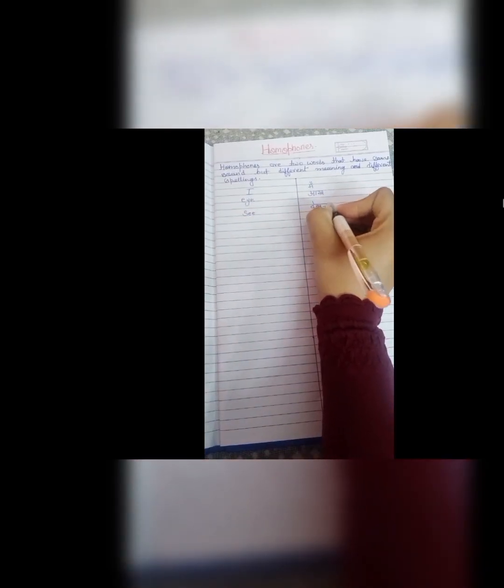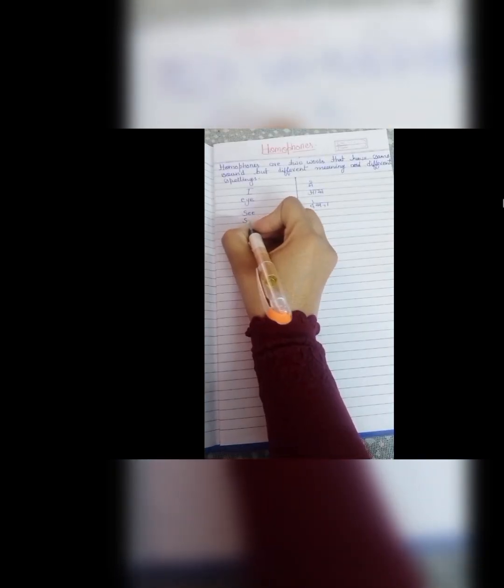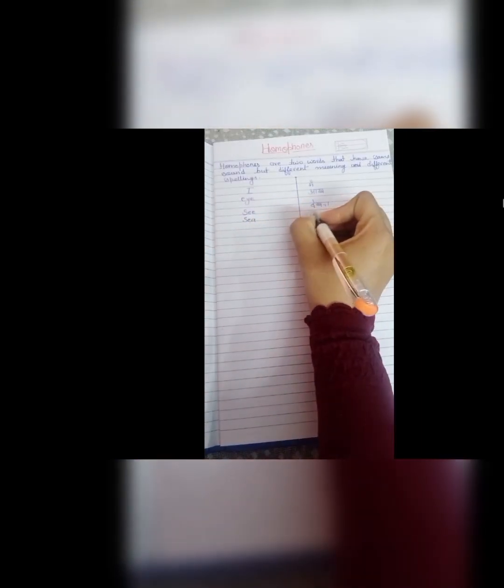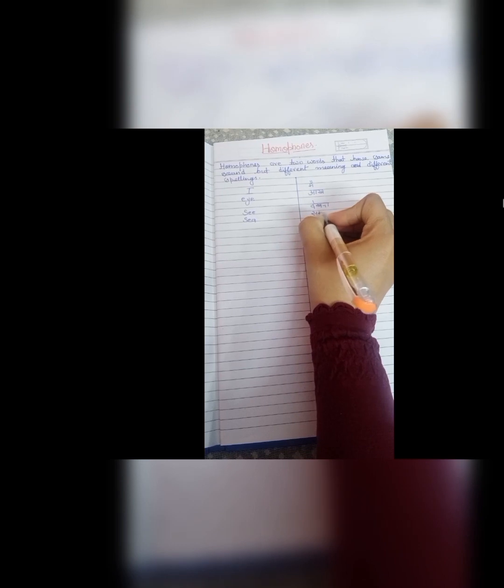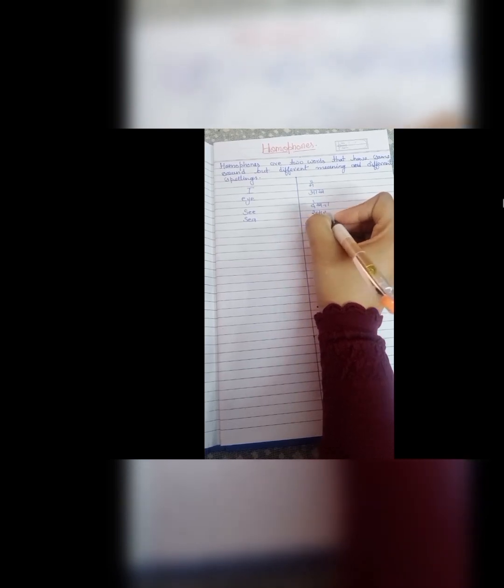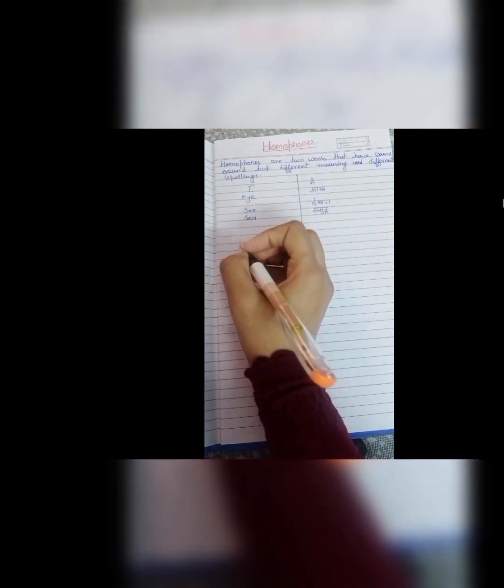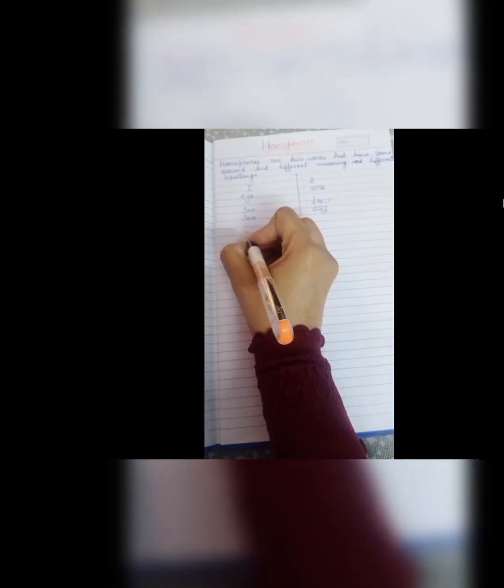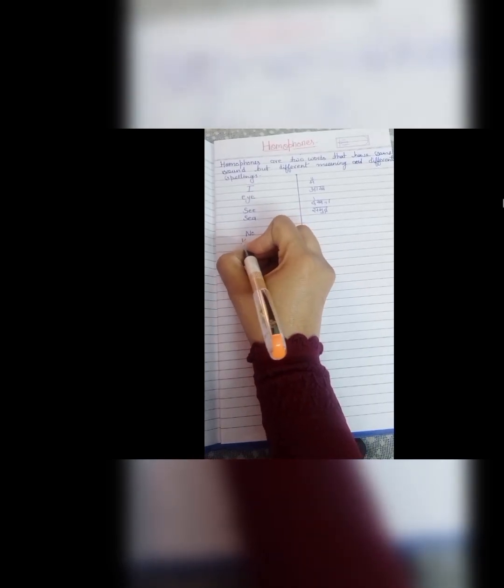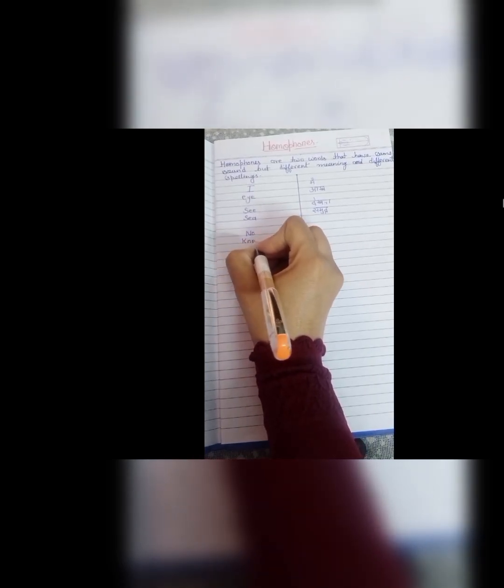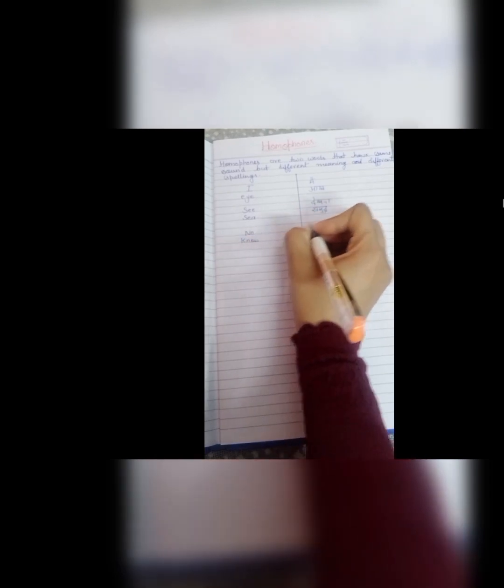Next is see and sea. S, double E, see means dekhna. And S, E, A means samundra. They pronounce same, see and sea. But it's me thoda-sa difference ho ta hai. S, E, A or E ka, jis se inka whole meaning change ho jata hai.